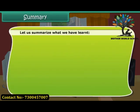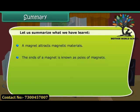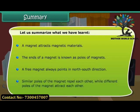Let us summarize what we have learned. A magnet attracts magnetic materials. The ends of a magnet are known as the poles of the magnet. A free magnet always points in the north-south direction. Similar poles of a magnet repel each other, while different poles attract each other.